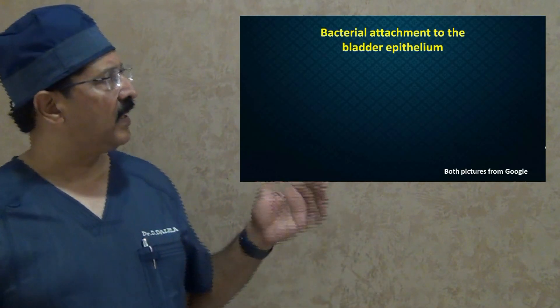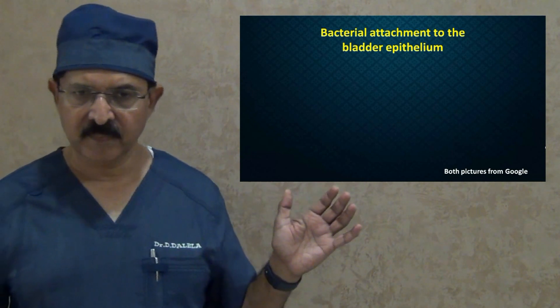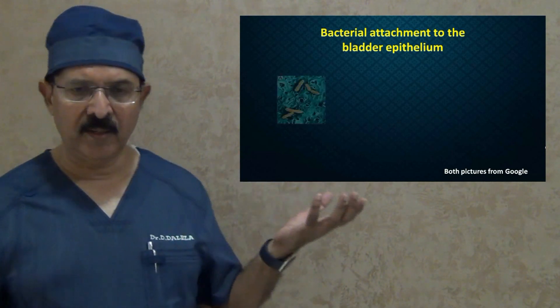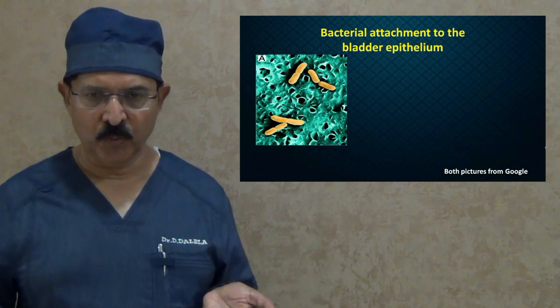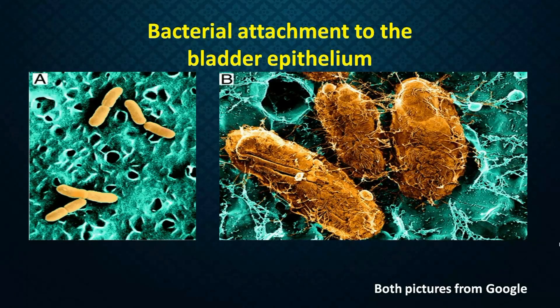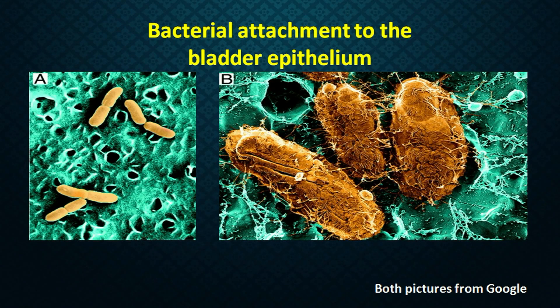The bacteria attaches to the urothelium — that is how it looks under low power microscope, and that is how it looks under high power microscope. They are just actually glued to the urothelial surface. That is the state of bacteria getting attached to the urothelial surface — they just got attached, and they are not invaded inside the urinary bladder wall.